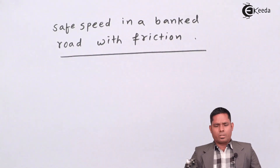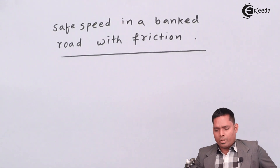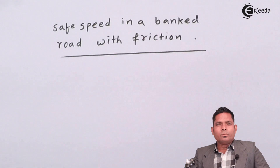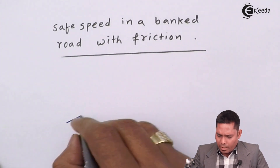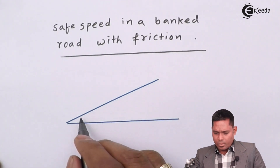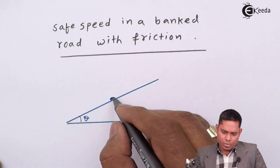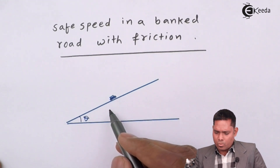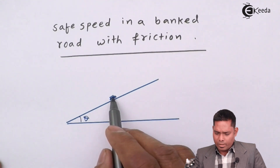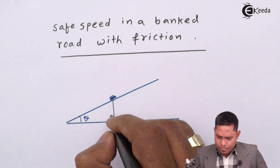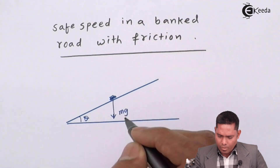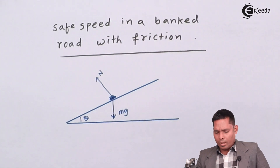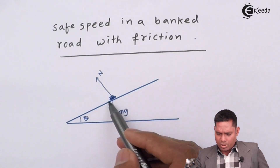We have considered friction force along with banked roads. I have a banked road like this, which also has friction. This angle is theta; the vehicle is here. This vehicle is subjected to different types of forces: one is the weight which is vertically downward — this is mg acting vertically downward. The normal reaction is perpendicular to the surface, it is N.